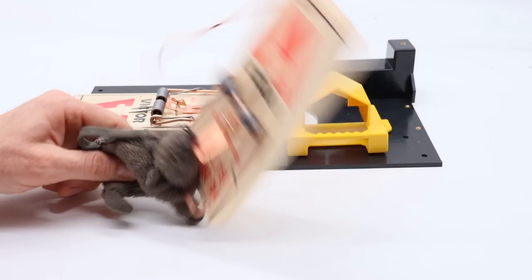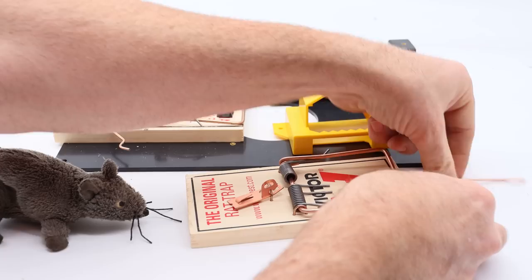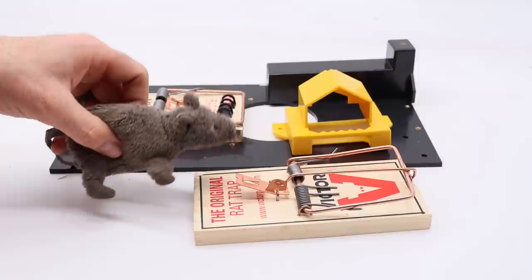Now this style of trap has been around a long time. It was first invented by William Hooker back in 1894, and since then it's been the go-to for killing rats. But it does have quite a few weaknesses. I've often heard from viewers that they check these traps, the bait is gone, but it didn't set off and catch a rat.